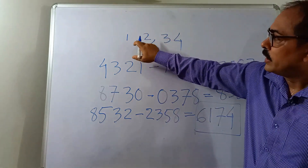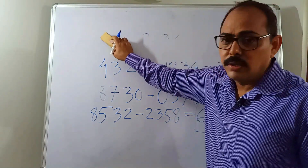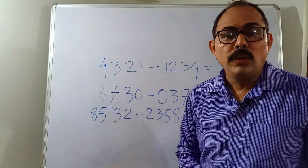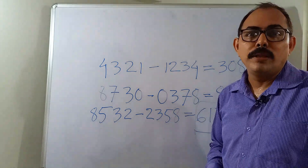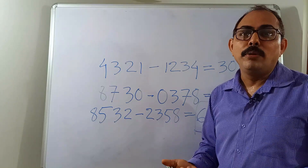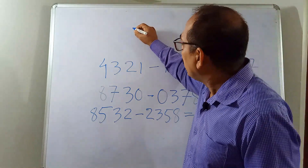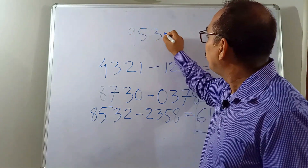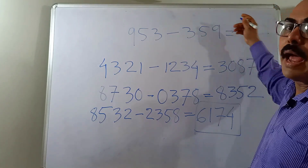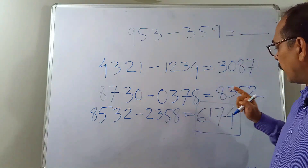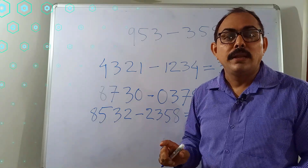Now I have a question for you. We have done this operation with four digits. If you do the same Kaprekar operation with a three-digit number, you will also get another constant. Can you try yourself and find out what it will be? For example, take the largest three-digit arrangement 953 minus the smallest 359, get the result, and continue the process. In our next episode I will be waiting for your answer!